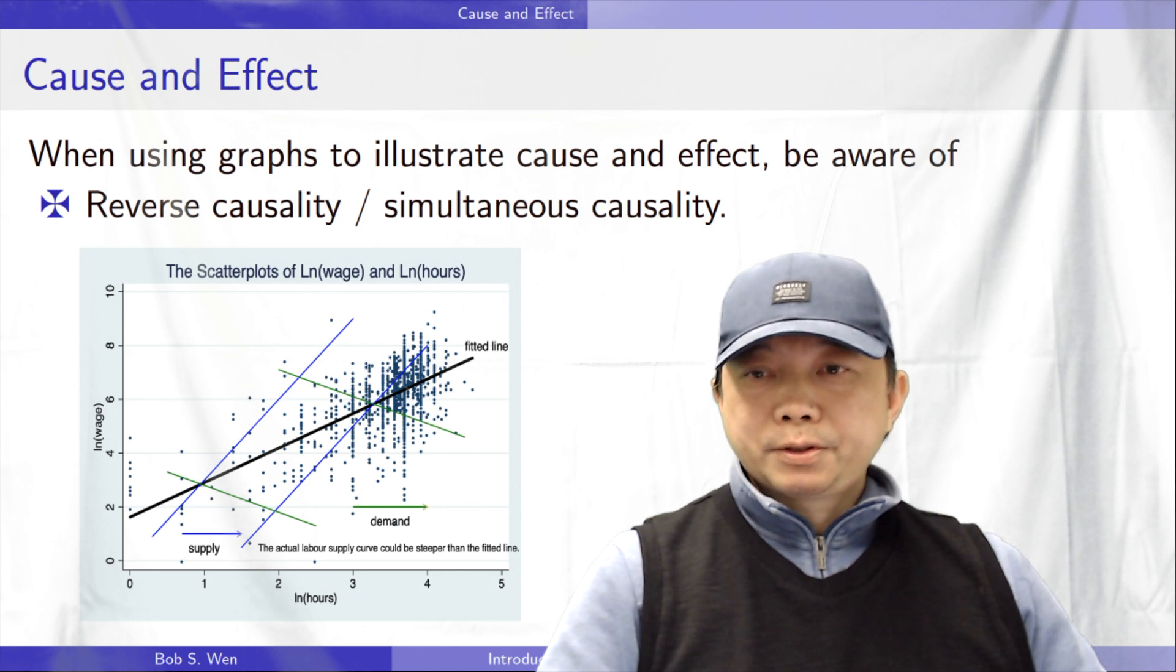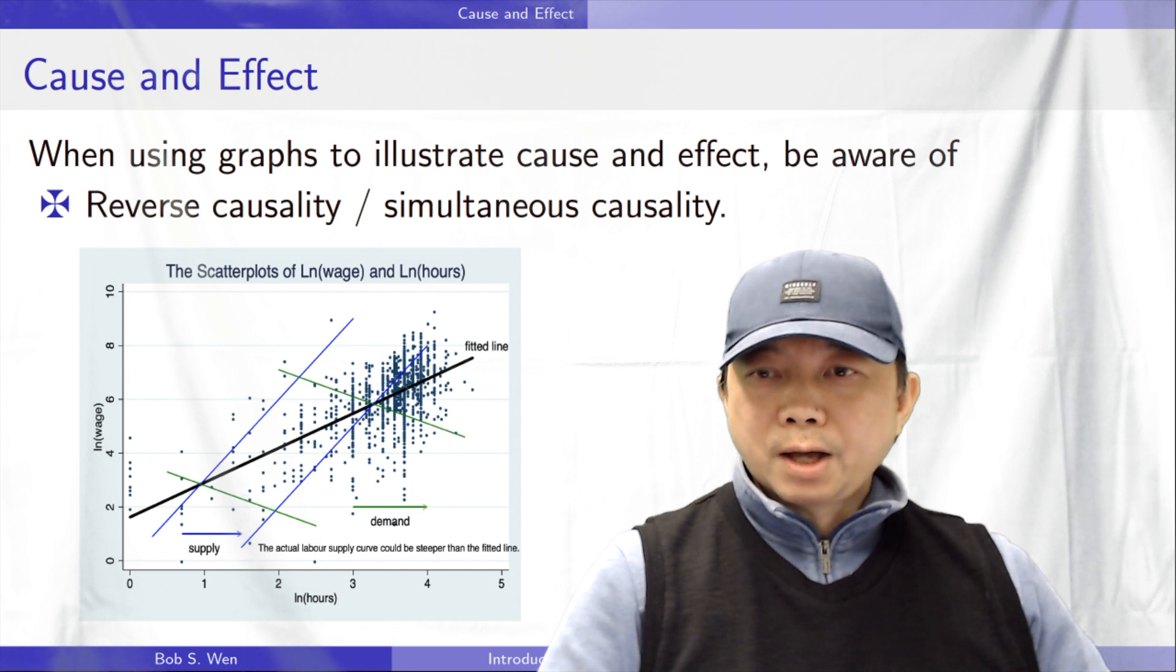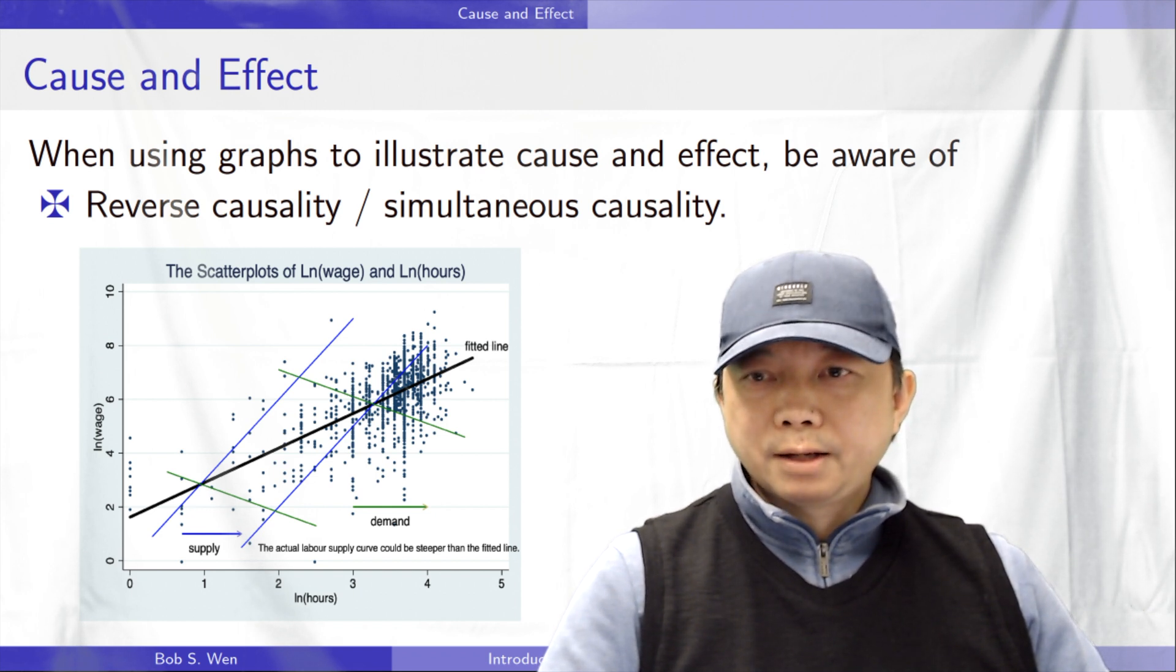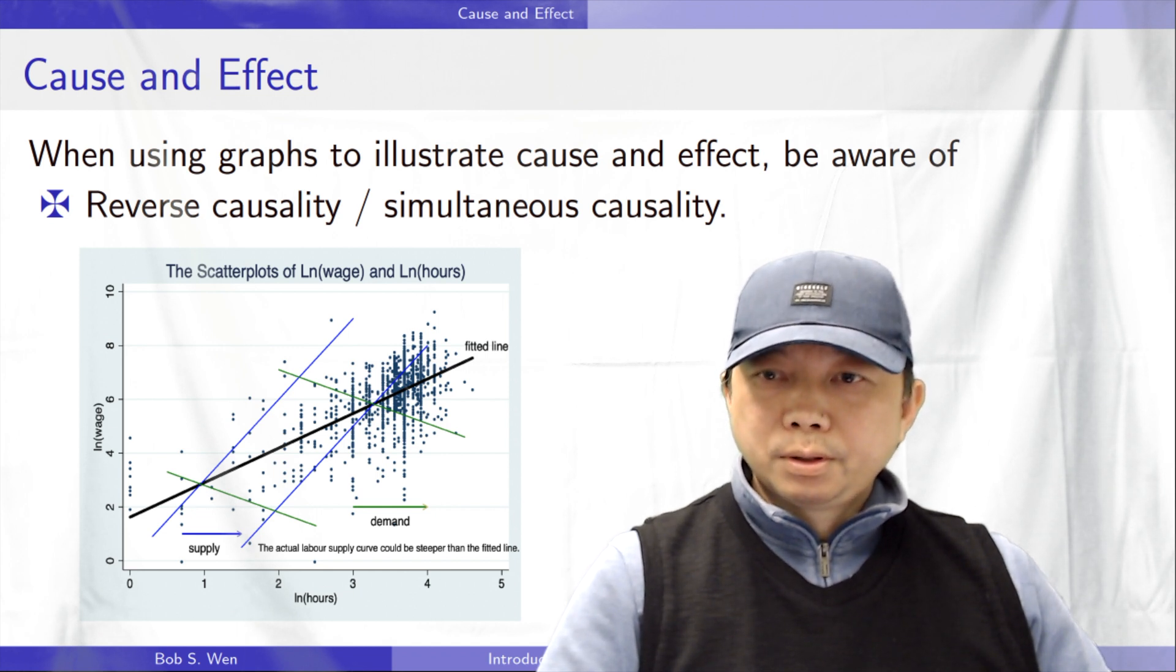It represents the outcome of the interplay of demand and supply. To trace out the labour supply curve, we could use the demand shifters and the instrumental variables method, or the structural equation system.